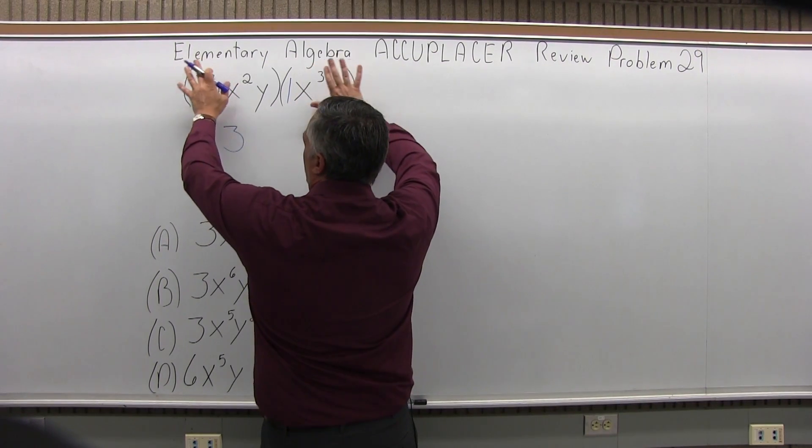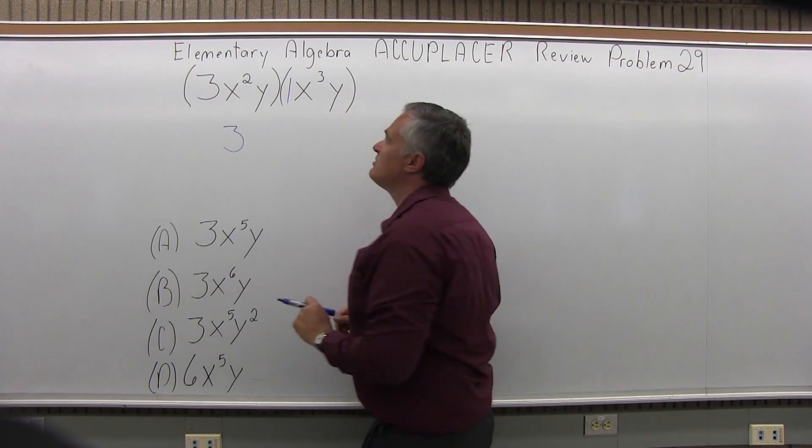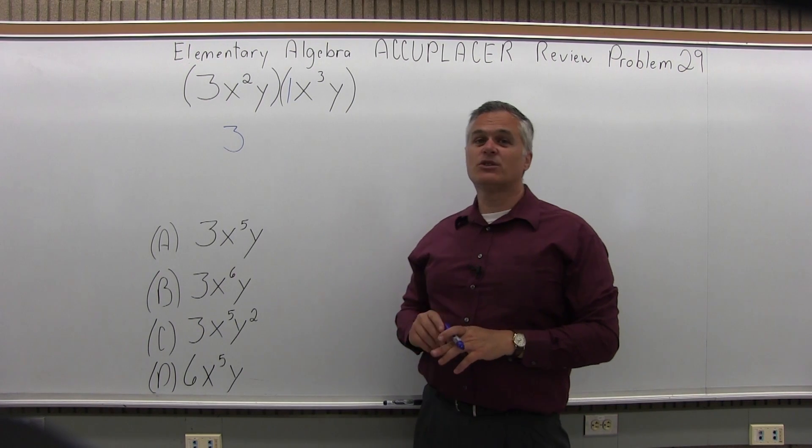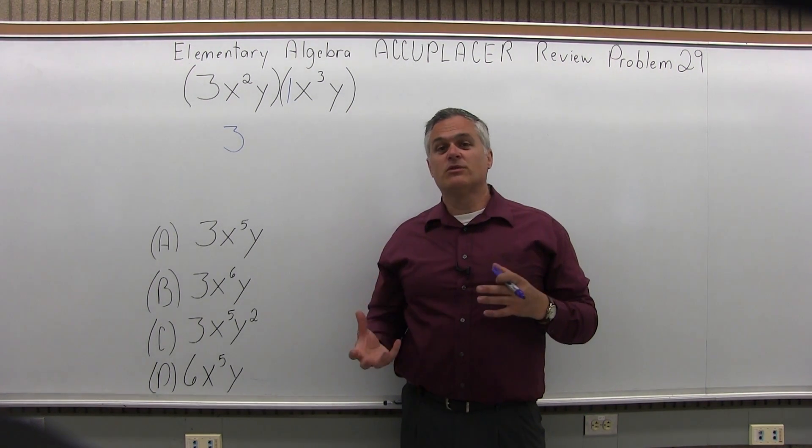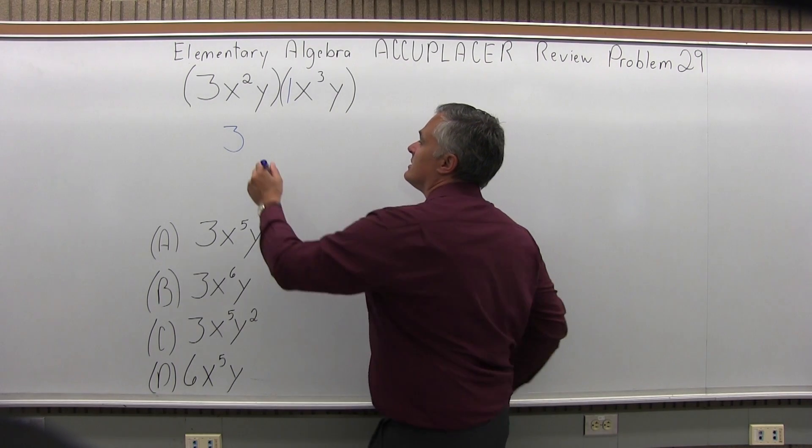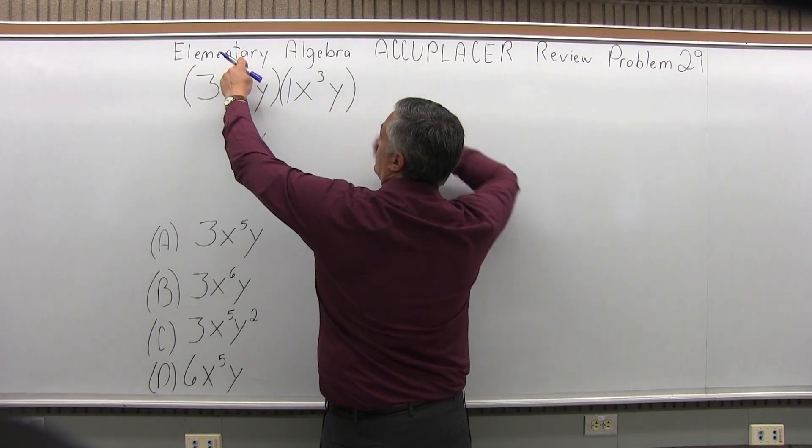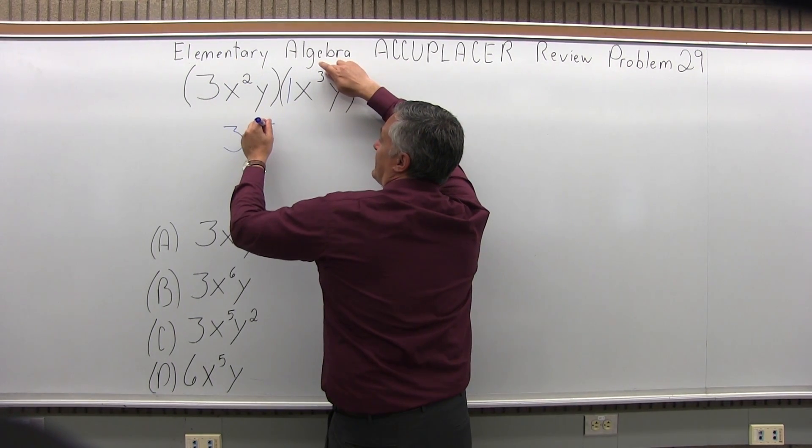Now multiply your x's. You have x to the second times x to the third. When you multiply two things with the same base, you add the exponents together. So I have x to the 2 plus 3, which gives me x to the fifth.